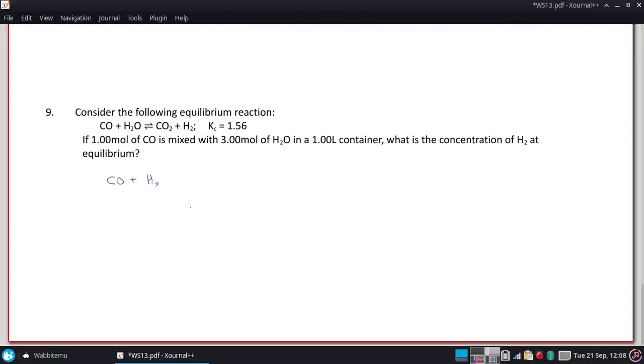Alright, so I'm going to do an ICE table on this. We have one mole in one liter, or one molar, and three to one is three molar. These are not mentioned, so they're assumed to be zero. So our change must be those going up. Therefore, these must drop. So I have one minus X, three minus X, X, and X for equilibrium.